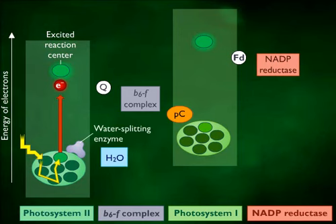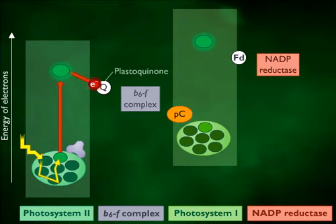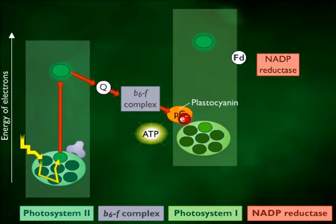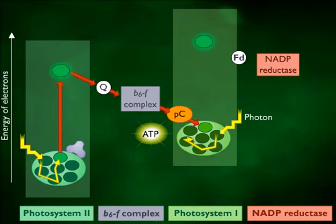From the enzymatic splitting of water and the release of oxygen, the electron then travels from the excited reaction center of photosystem 2 down an electron transport chain and finally to the reaction center of photosystem 1. This electron transport system generates a proton motive force that is used to produce ATP. Since the excited electron does not return to photosystem 2, this mechanism for making ATP is called non-cyclic photophosphorylation.